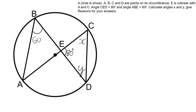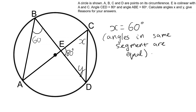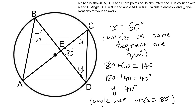Here is the answer. X equals 60 because it's in the same segment as angle ABE. To find Y, the vertically opposite angle is 80, and you can then work out the angle here, which equals Y — that's 40 degrees.